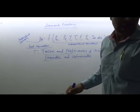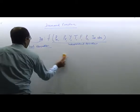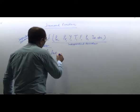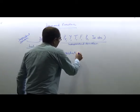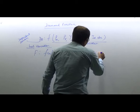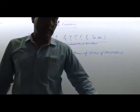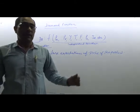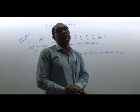Next is future expectations. If future price is expected to rise, people will demand more now. Normally, we know there is an indirect link between price and quantity demanded — higher the price, lower the demand; lower the price, higher the demand.